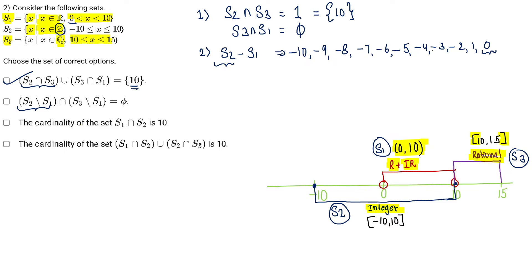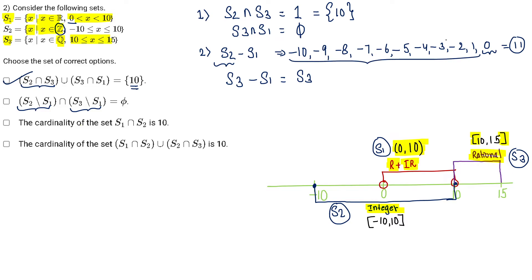If you remove S1 from S2, how many values do you have? 1, 2, 3, 4, 5, 6, 7, 8, 9, 10, 11 — we have 11 values. Now if you remove S3 from S1, you get S3 directly because they are not common. Taking the intersection of these two, nothing comes out — all the negative terms from S2 minus S1 and S3 are positive rationals, so nothing is in common. When we take the intersection our final answer will be the empty set, so option B is also correct.